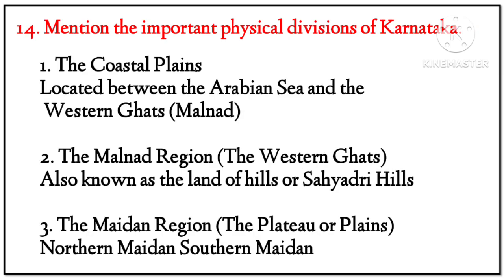Question 14: Mention the important physical divisions of Karnataka. Answer: First, the coastal plains — Karavali — located between the Arabian Sea and the western Ghats. Second, the Malenadu region — the western Ghats, also known as the land of hills or Sahyadri Hills. Third, the Maidan region — the plateau or plains — northern Maidans and southern Maidans.